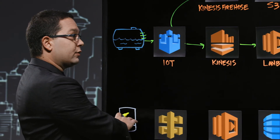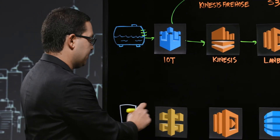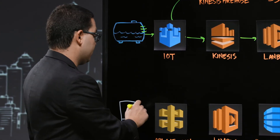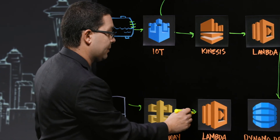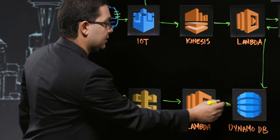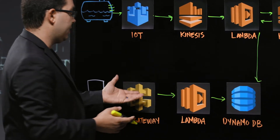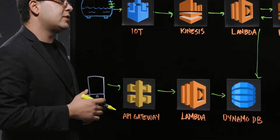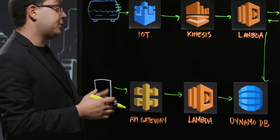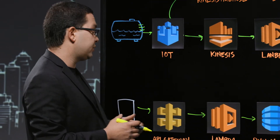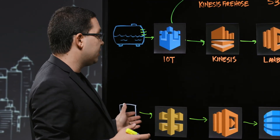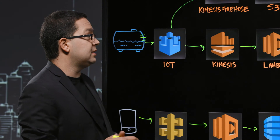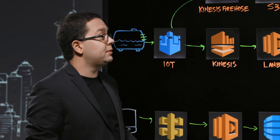The mobile app that got notified is able to access the data in DynamoDB through API Gateway and additional Lambdas that present a RESTful API. Mobile developers can build the mobile application and just consume an easy, simple RESTful API, unaware of all the complexity behind it.